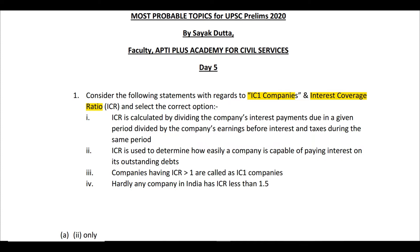The second statement — ICR is used to determine how easily a company is capable of paying interest on its outstanding debts — is actually correct. In the numerator we have the earnings of a company before taxes and interest deductions, and in the denominator we have the interest payment due. So if ICR is more than one, the company will be in a position to pay back the interest.